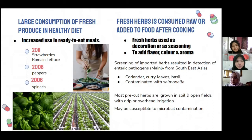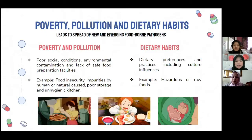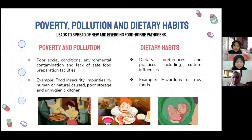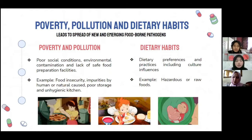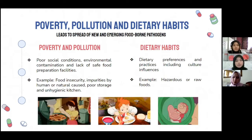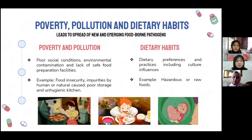Moving on to the next factor: poverty, pollution, and dietary habits. Poverty and pollution can lead to the emergence of foodborne pathogens and cause foodborne illnesses. This is due to poor social conditions such as food insecurity, which makes people consume whatever food is available, such as street food. Environmental contamination — from bacteria, chemicals, or natural causes — can occur during preparation of food. Lack of safe food preparation facilities, such as poor storage space and unhygienic kitchens with dirty knives and improper cooking areas, creates a favorable environment for foodborne pathogens to reproduce and spread.